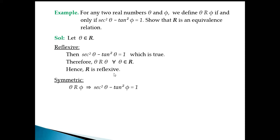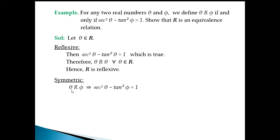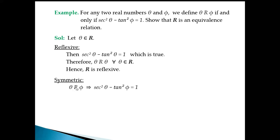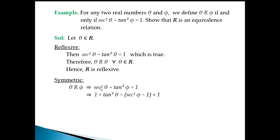For symmetric, suppose θ is related to φ, so sec²θ minus tan²φ equals 1. We need to show φ is related to θ. We convert using trigonometric identities: sec²θ equals 1 plus tan²θ, and tan²φ equals sec²φ minus 1.